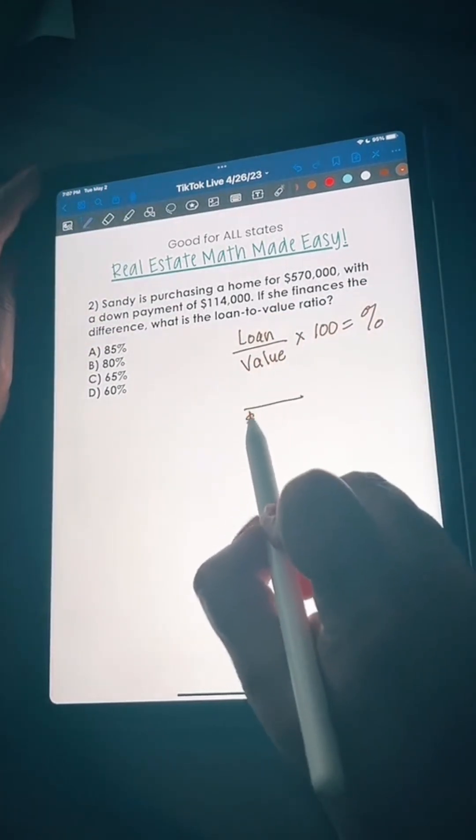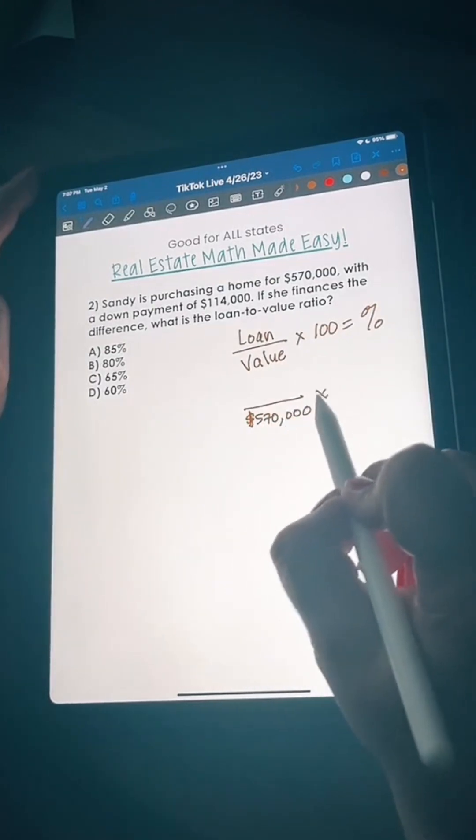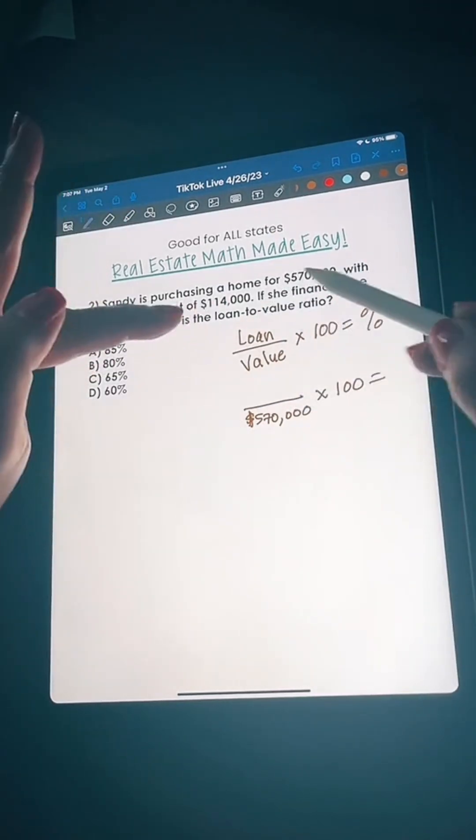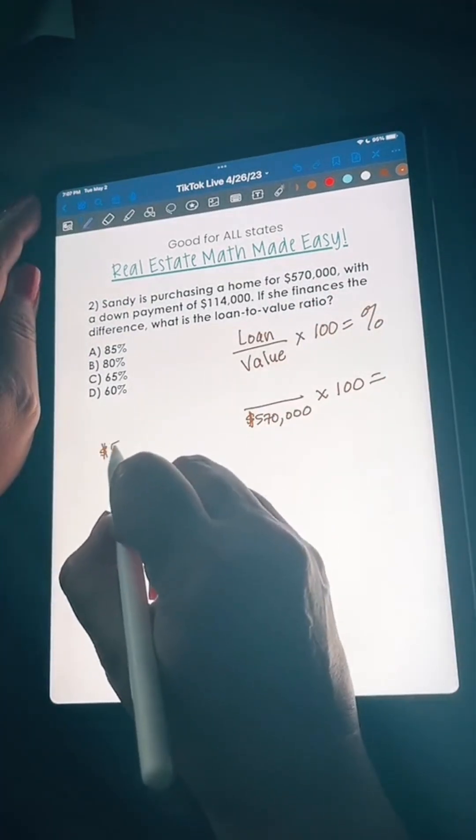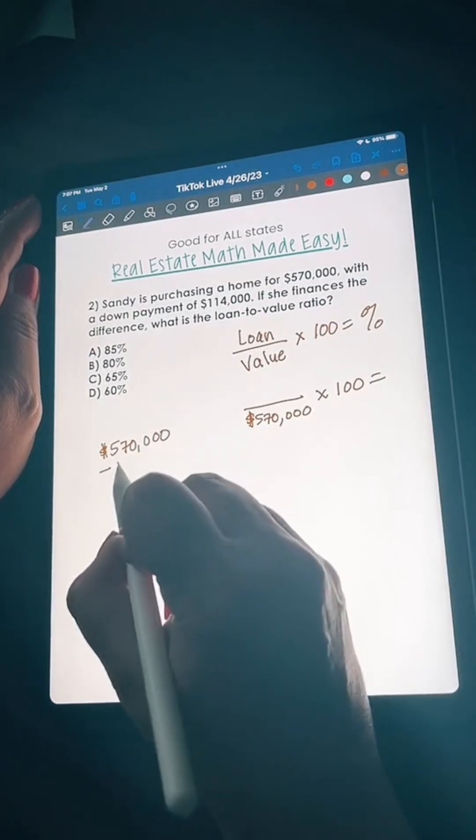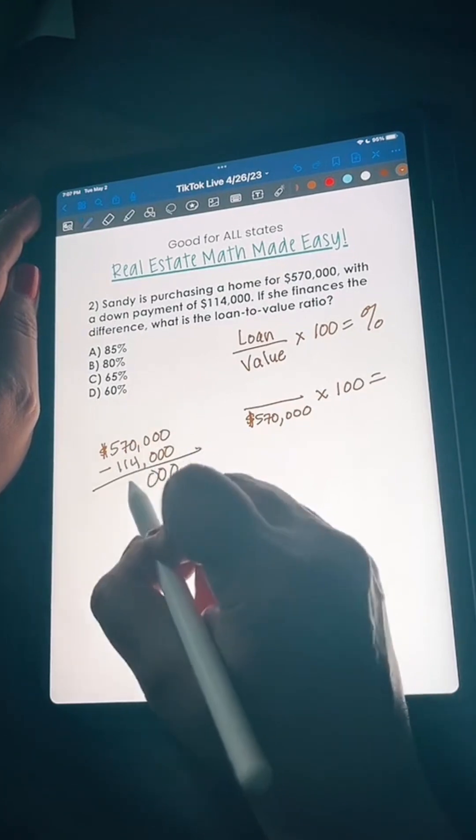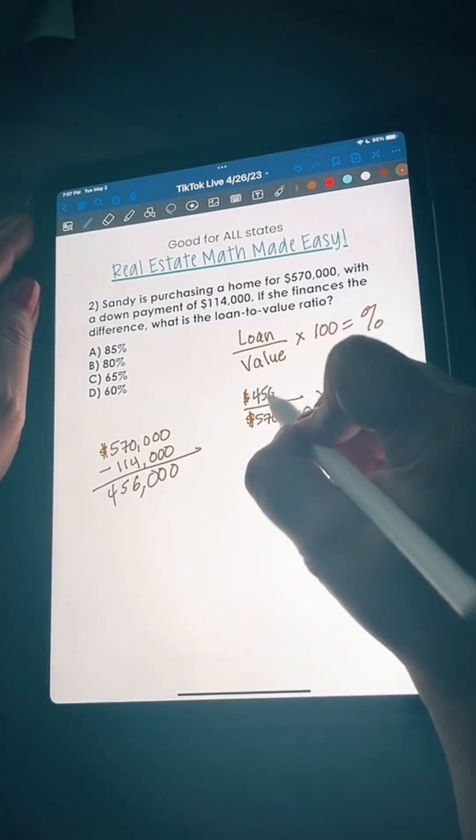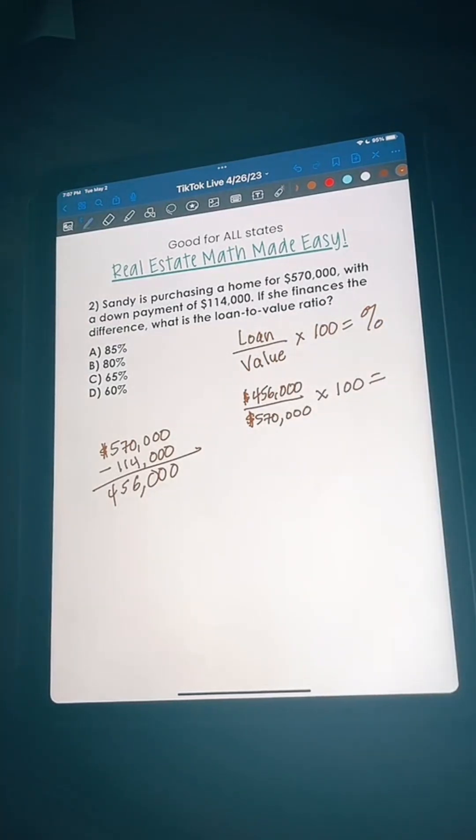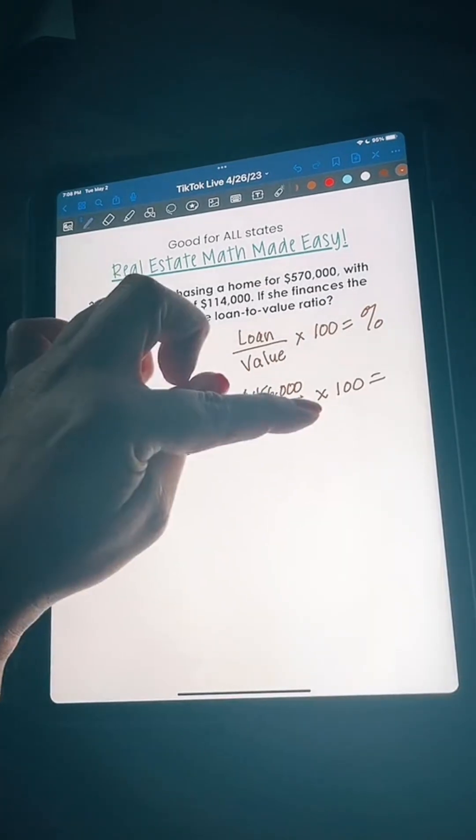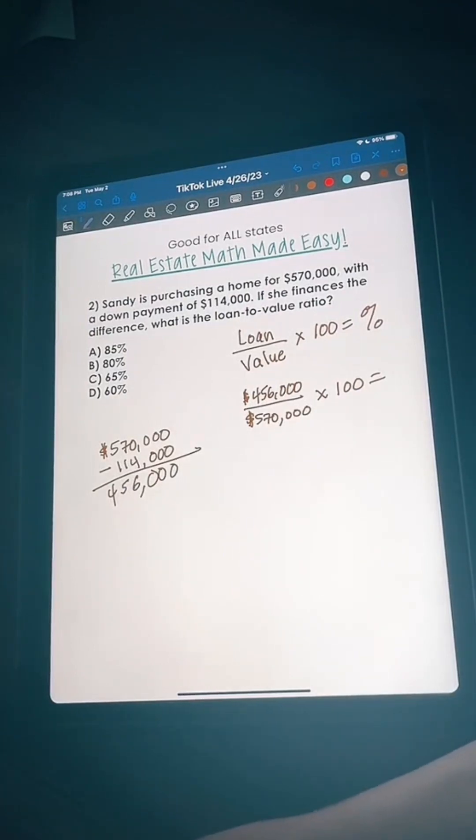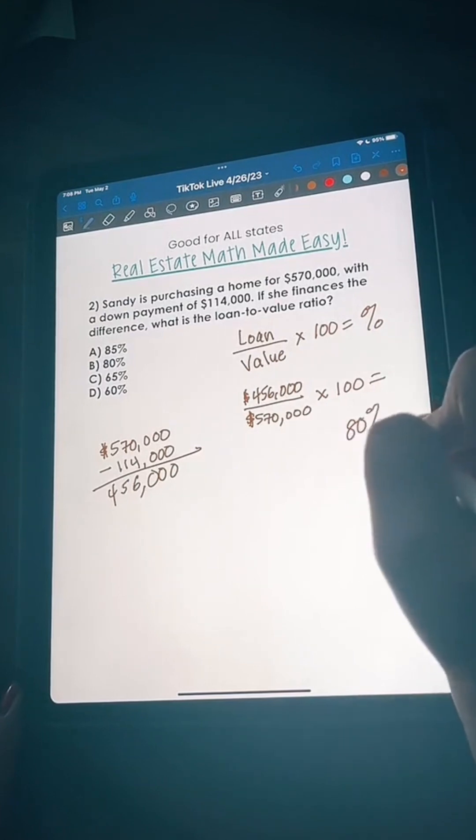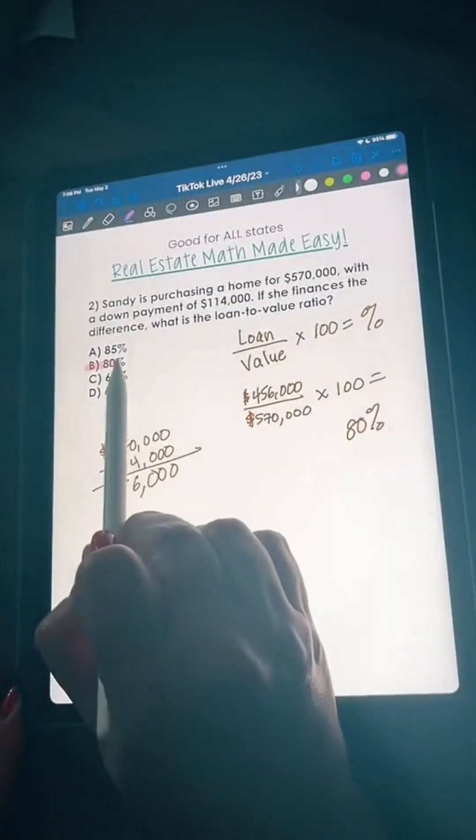Now we got to find out how much the loan is and we're going to do that by subtracting these two amounts. 570,000 minus 114,000 equals 456,000. That's my loan amount. Now we just divide this, multiply by 100, and we're going to get our percent. 456,000 divided by 570,000 times 100 gives us a loan to value of 80%. The answer is B.